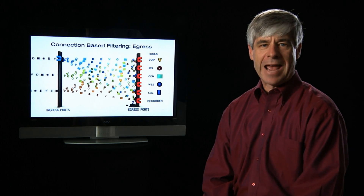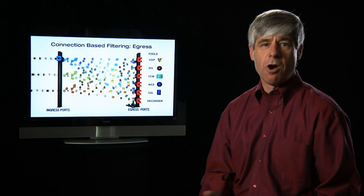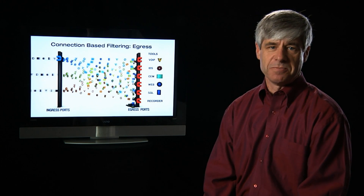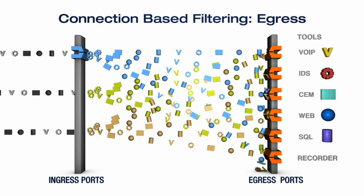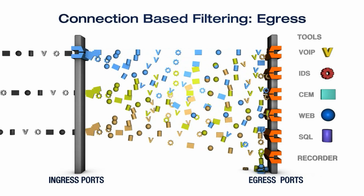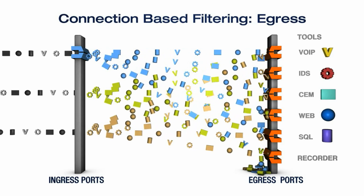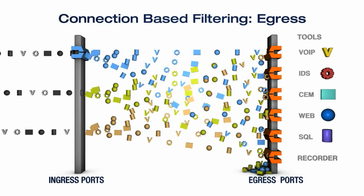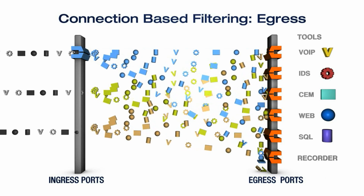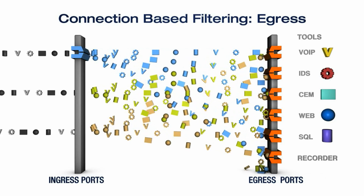This type of simple filtering should only be used where a single tool is present. Connection based filtering on the outgoing or egress ports also has issues. Since no traffic is filtered until it meets its final destination, too much data is sent across the appliance, causing oversubscribed traffic that will be automatically dropped by the switch before it ever even gets to the tool. Thus, the tool may be receiving limited data.